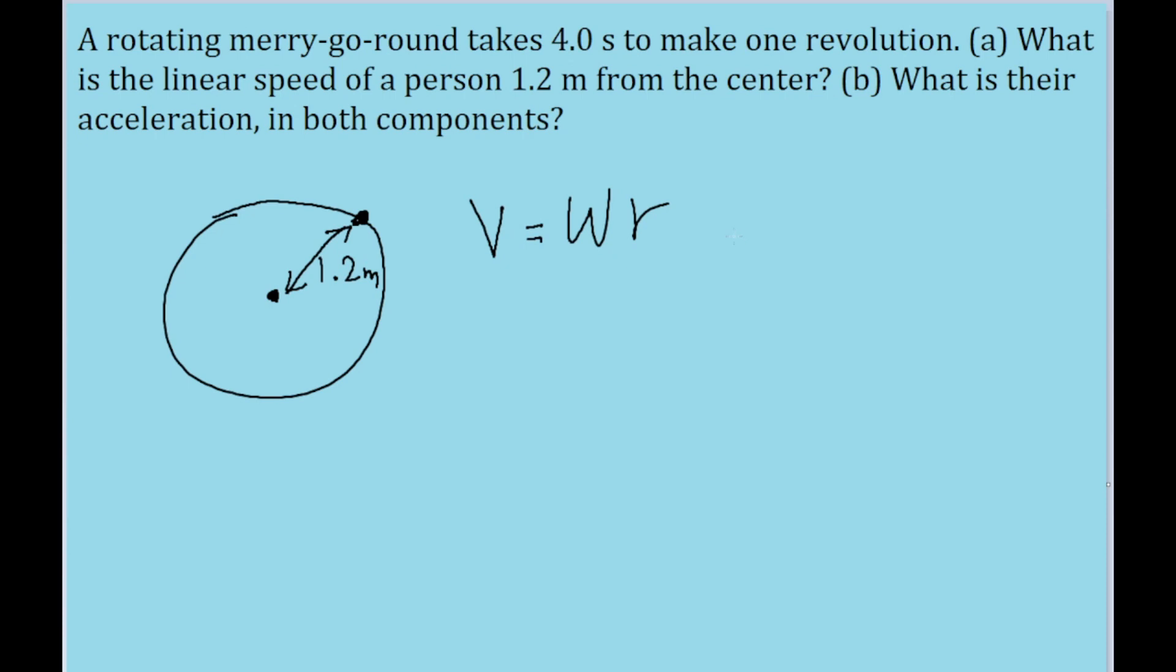Now, for our purposes, we are not given the angular speed directly, but we are given enough information to figure it out, because the angular speed is how long it takes for it to make one full revolution per second. So that's two pi radians, which is one full revolution, divided by the amount of time it takes,